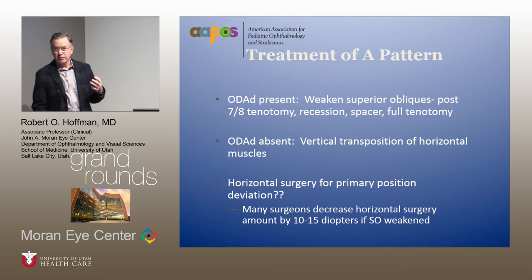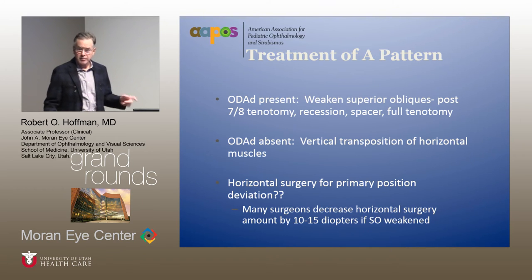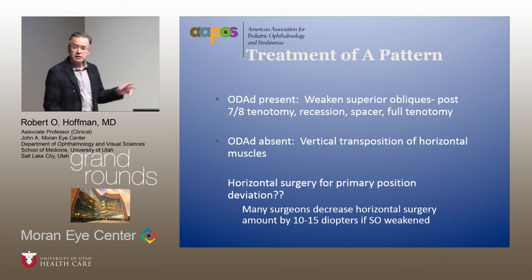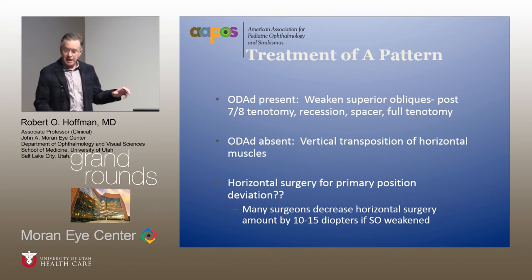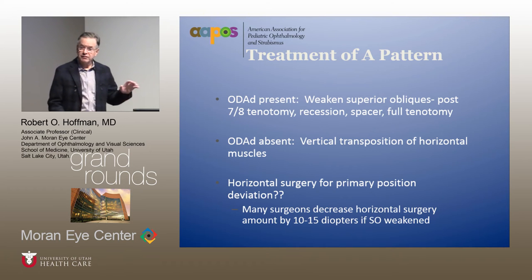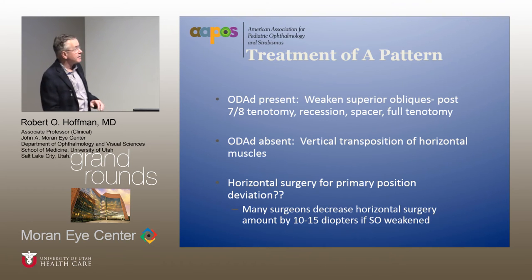What are three things the superior oblique muscle does? First, it is a cyclo-rotatory muscle — in-cyclo-rotation. The secondary effect is vertical function: depression. The tertiary effect is abduction. Depending on what you want to accomplish, you may choose different procedures. A posterior 7–8mm tenotomy will address the vertical function of the superior oblique with minimal effect on the cyclo-rotatory fibers. Other options include recession, spacers, and full tenotomies.